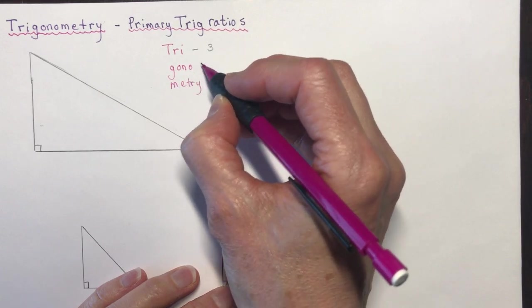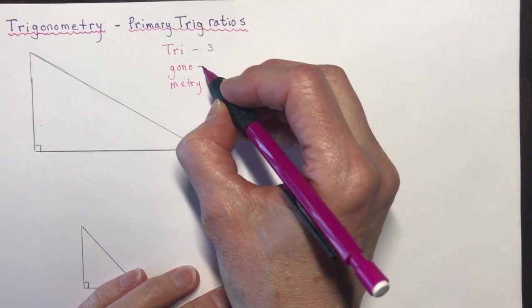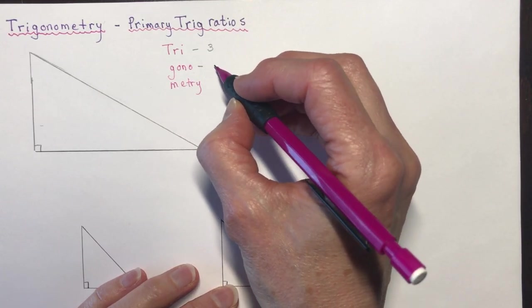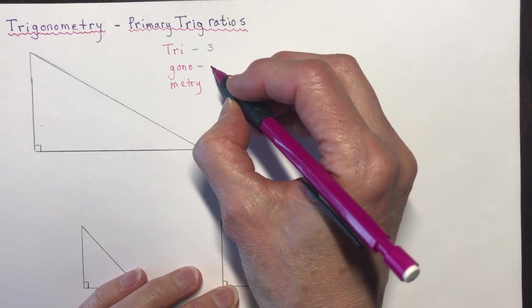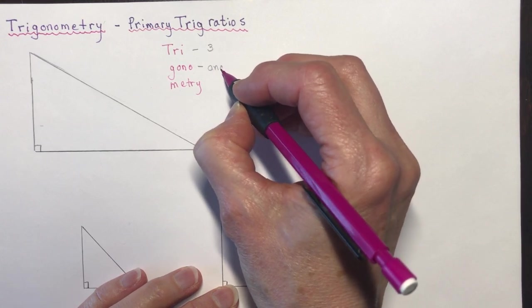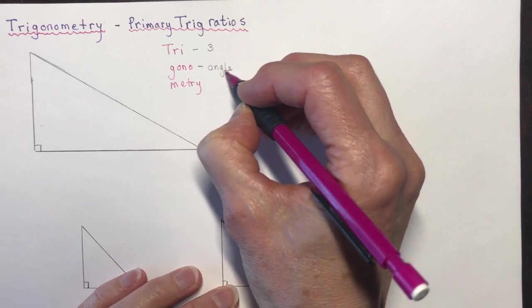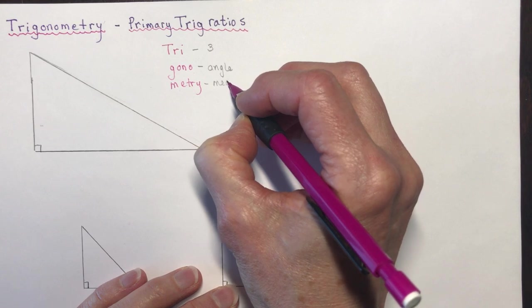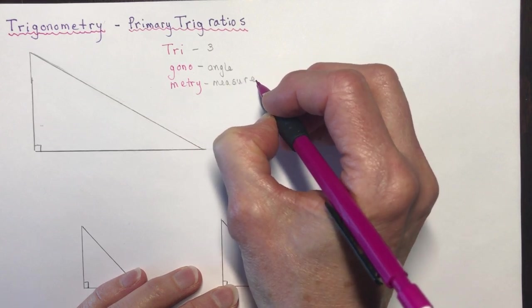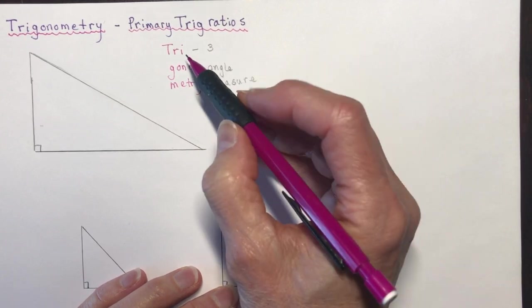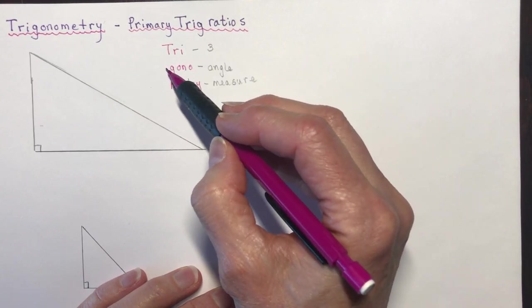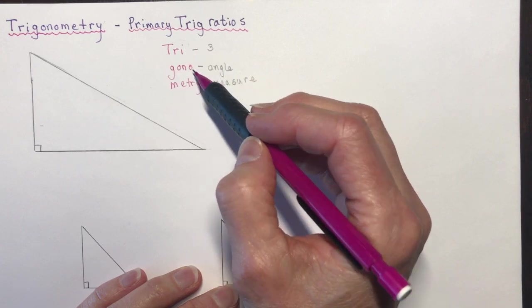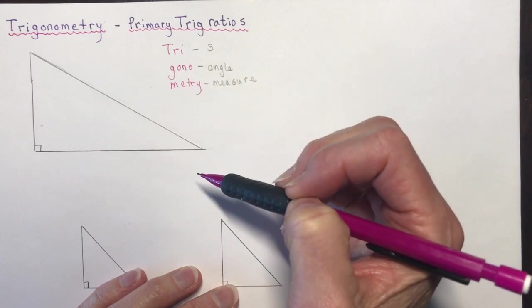Gono, maybe a little harder to figure out, comes from gonia, which means angle. And metri means measure, so three angle measures. Trigon is like a triangle, so triangle measures.